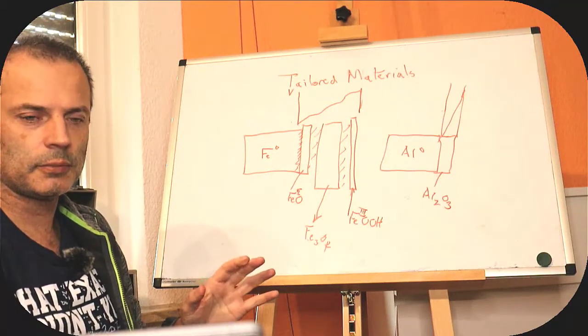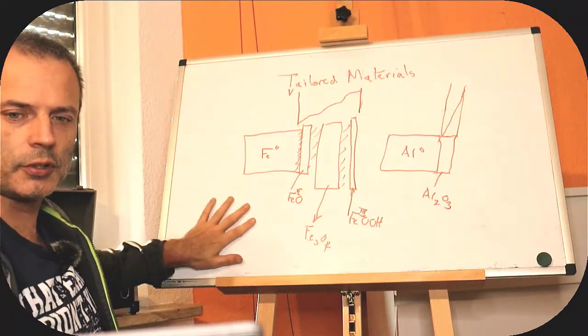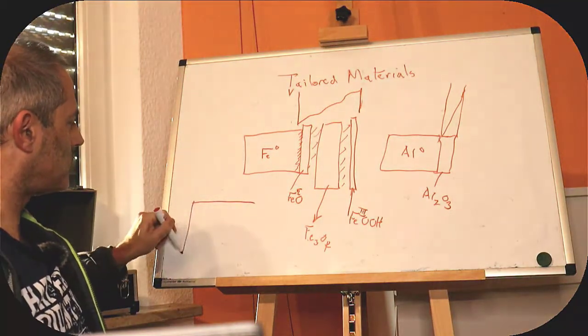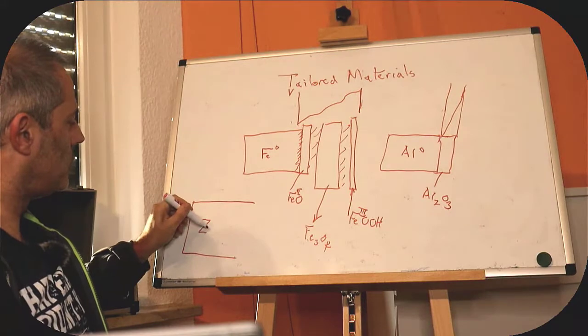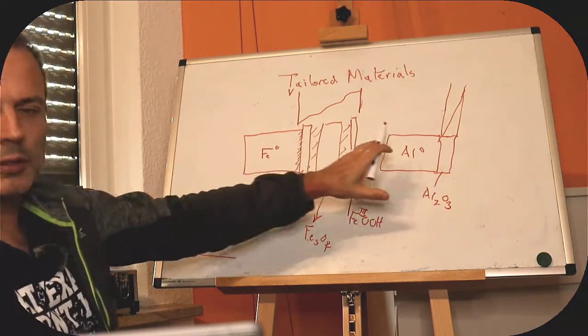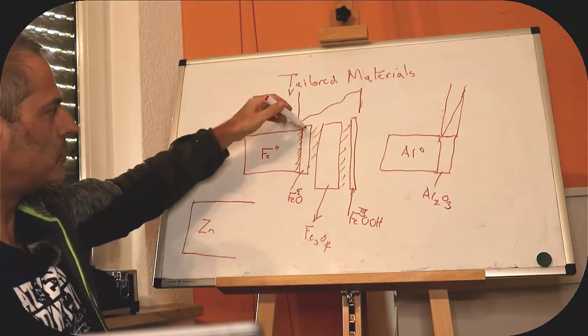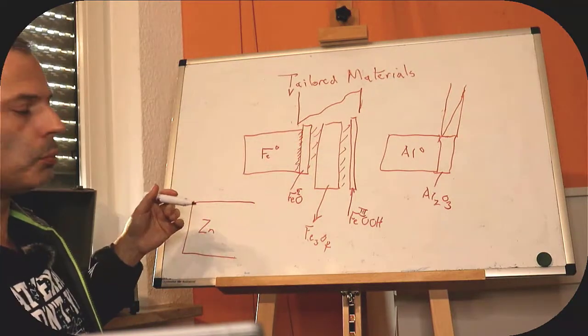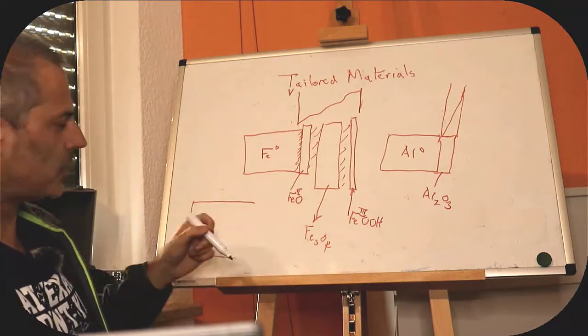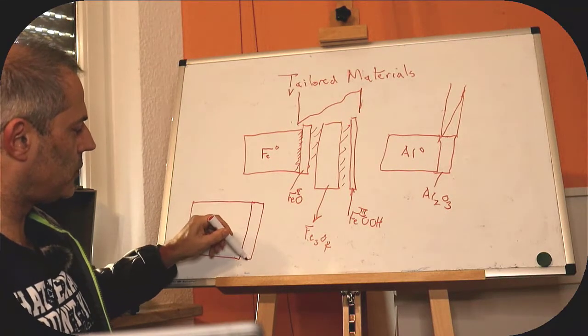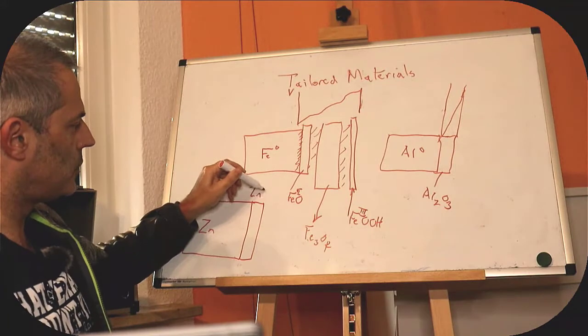Here we've got changes in conductivity because we've got different real materials in between. And here we don't have that. It makes the aluminum a bit simpler to deal with. And let's have a third case. Let's take zinc.